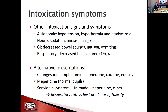You can't always count on these symptoms to diagnose opioid overdose in every situation. For example, with co-ingestion of a sympathomimetic like amphetamine, ephedrine, cocaine, or ecstasy, you can see either balancing out or autonomic hyperactivity. Similarly, overdose of agents like tramadol or meperidine can trigger serotonin syndrome, particularly in combination with other serotonergic agents. Drugs like meperidine don't actually cause pupillary constriction. In general, respiratory rate is considered the best indicator of severe toxicity.